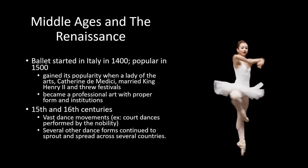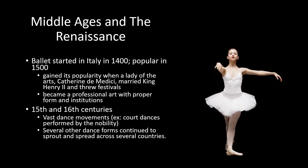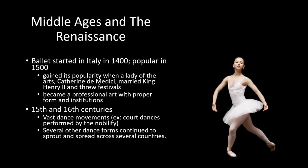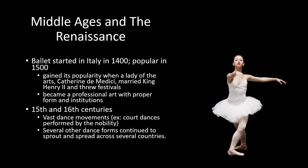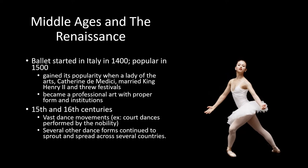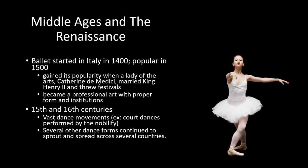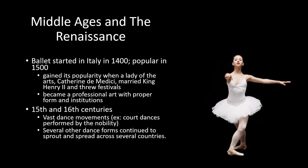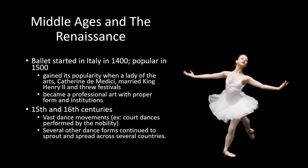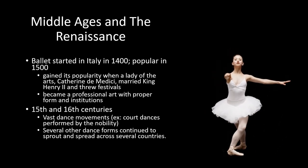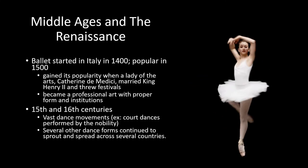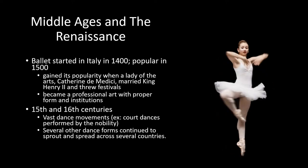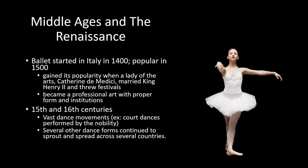Ballet started in Italy in 1400, but it did not become popular until the 1500s. It gained its popularity when Catherine de' Medici married King Henry II, and they threw festivals where they would perform ballet dances. Eventually it became a professional art with proper form and institutions. A vast dance movement occurred throughout the course of Europe in the 15th and 16th centuries. No court dances performed by the nobility came about as well as the rise of the art of ballet in Italy and France. Several other dance forms continued to sprout and spread across several countries.